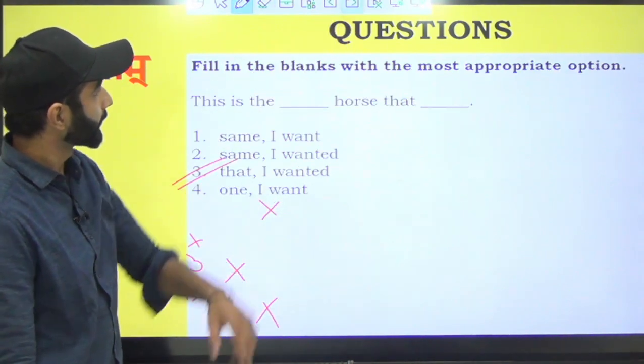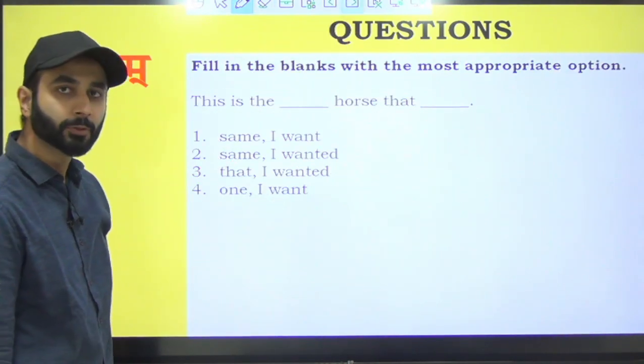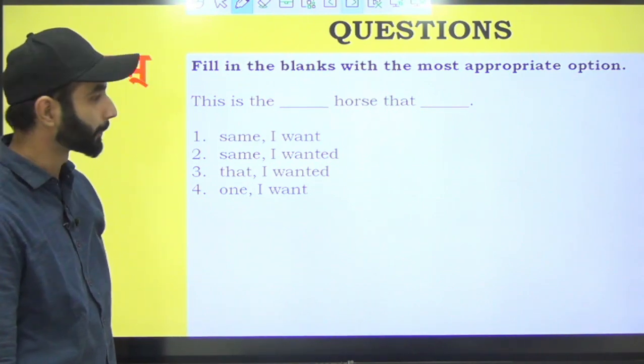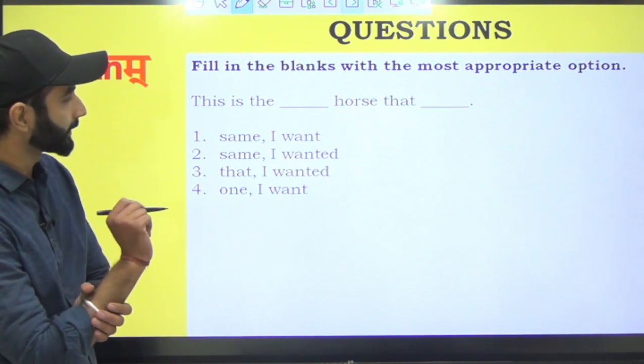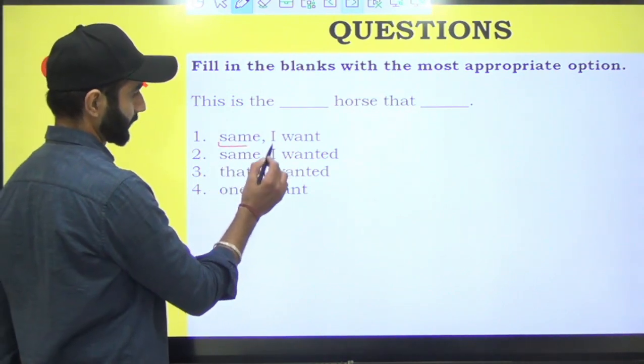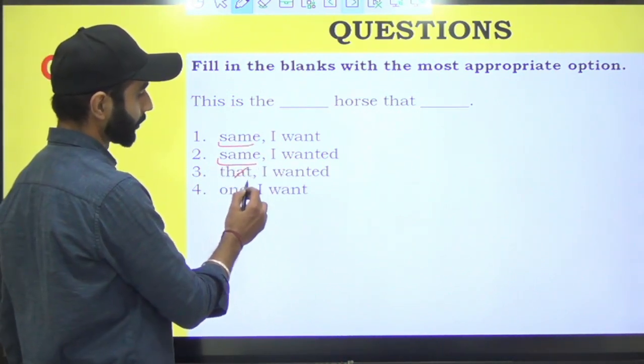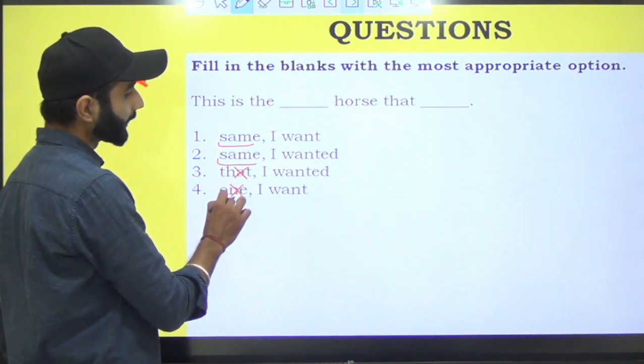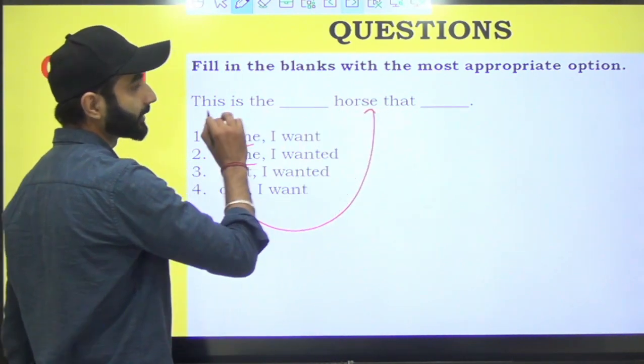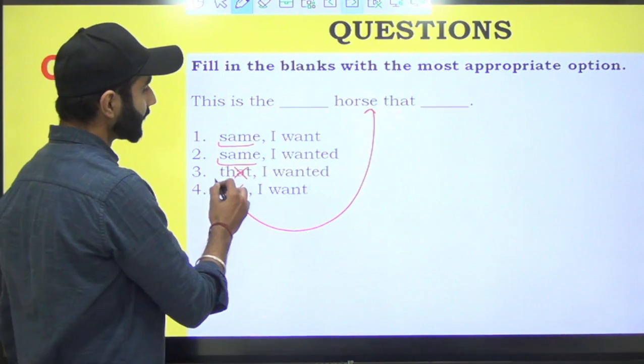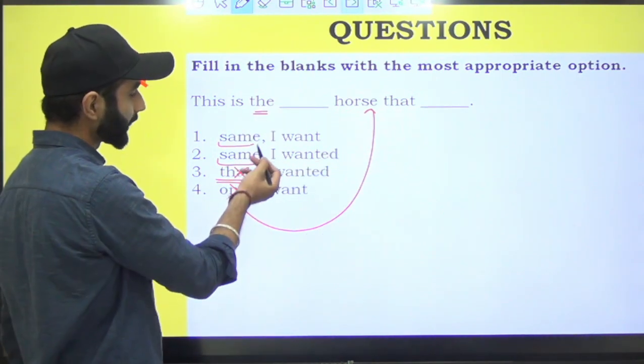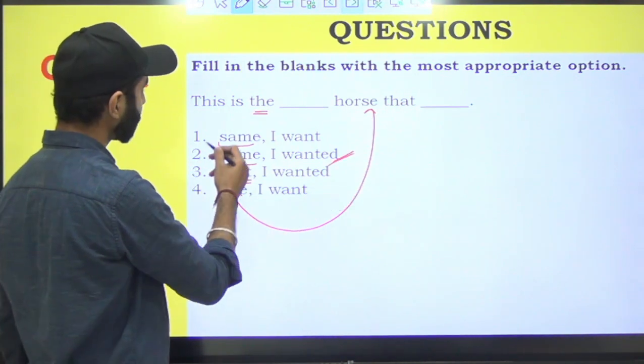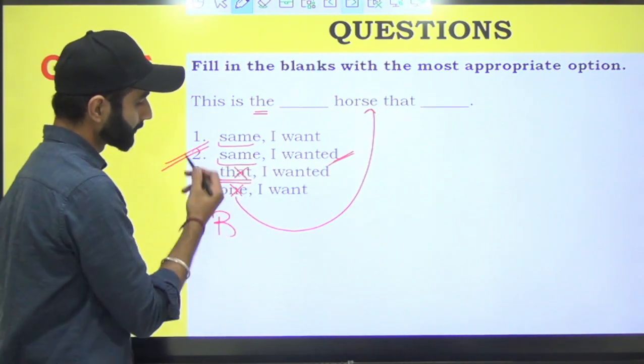Moving on further. You have to again fill in the blanks with the most suitable option. This is the dash horse that dash. Same horse. 'The one' nahi lagega because horse already given hai. That nahi lagega because 'the' is given. That horse ya the horse. So pehli mein same aayega aur saath mein I wanted aayega. Answer is B.